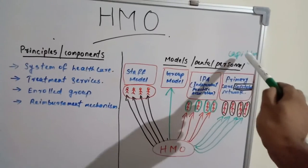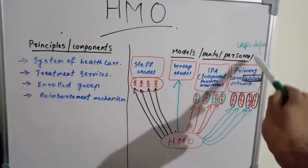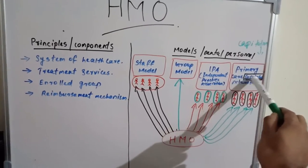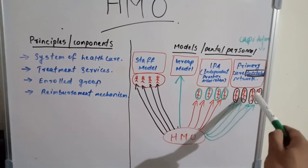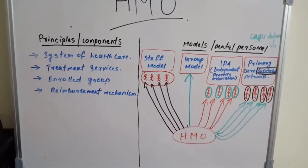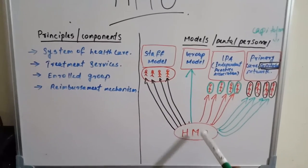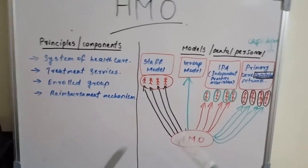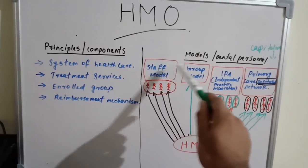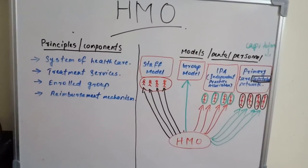But it works under capitation plan. That is why the primary care capitated network also receives individually the amount. So this is how HMO reimburses the dental personal. We have four groups: staff model, group model, independent practice association, and primary care capitated network.